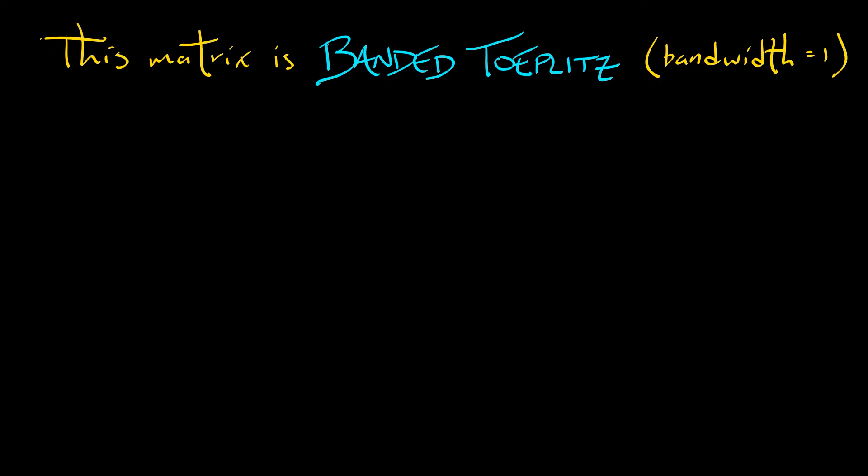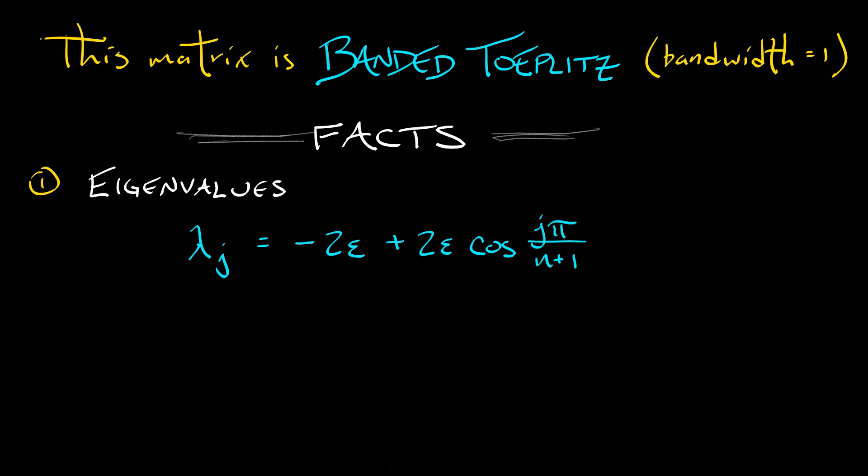What we are going to talk about is the eigenvalues of this matrix. Here are the facts. The eigenvalues of this matrix, lambda sub j, is given by negative 2 epsilon, that diagonal term, plus 2 epsilon times cosine of j pi divided by n plus 1. And this is j going from 1 up through n. Those are the eigenvalues.